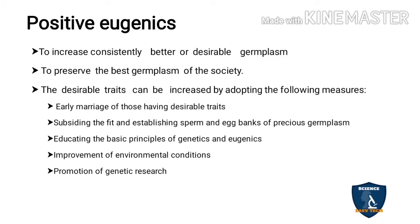Positive eugenics aims to increase consistently better or desirable germ plasm in society. We collect the best germ plasm — from vigorous, disease-resistant, and healthy individuals with no genetic disease — and preserve it for future generations. The best germ plasm means selecting chromosomes, that is sperm or ovum, from such persons to create individuals with desirable characters.